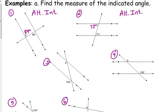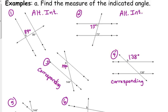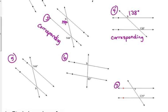Number three with 144 degrees — those are corresponding angles. They're in the same position relative to the parallel lines and the transversal, so corresponding angles are congruent: 144 degrees. Number four is also corresponding, so that's 138 degrees. Number five — alternate exterior. They're on opposite sides of the transversal and outside the parallel lines, so they have the same measure: 144 degrees. Number six is also alternate exterior, so that angle is 83 degrees.